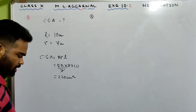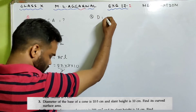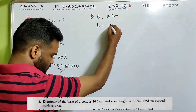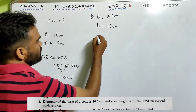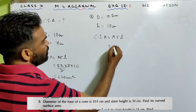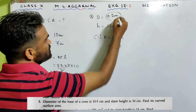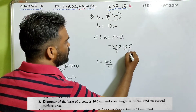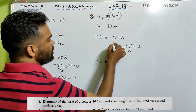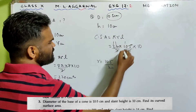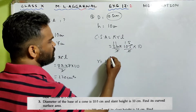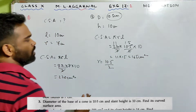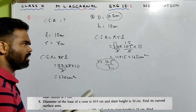Number 3: The diameter is 10.5 cm and the slant height is 10 cm — find the curved surface area. CSA = πRL. π = 22/7, R = 10.5/2, L = 10. So (22/7) × (10.5/2) × 10 = 11 × 15 = 165 cm². Pretty easy — just use the formula πRL.